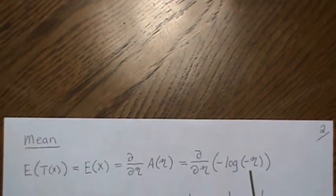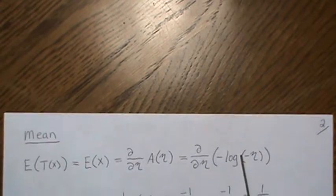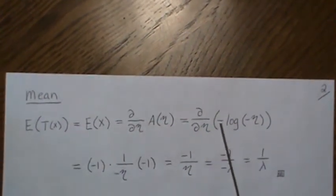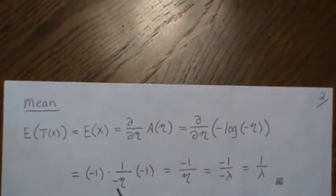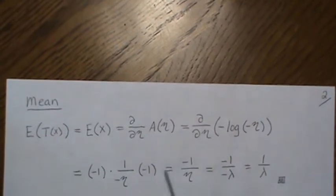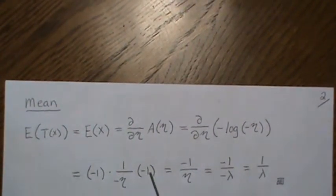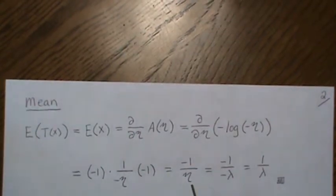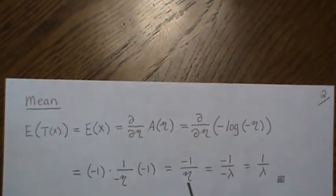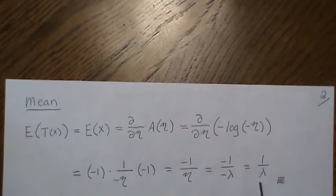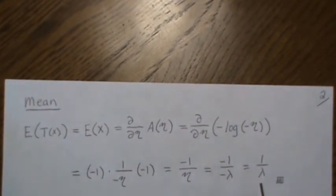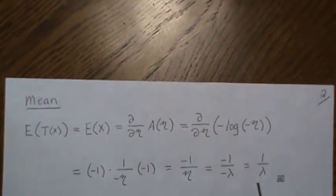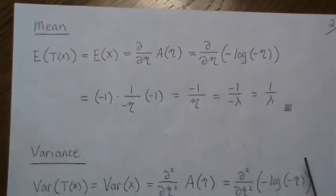Our log partition was this. To take the derivative, the minus is a constant, so it's 1 over minus lambda times the derivative inside which is minus 1. They cancel leaving just minus 1 over eta. We stick in the value for eta which is minus lambda, and the negatives cancel, giving 1 over lambda, which we know to be the mean of an exponential distribution.